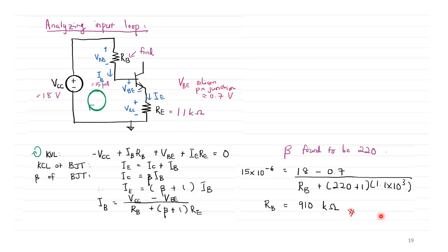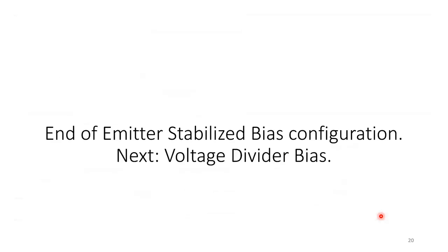We have now completed the subtopic of emitter stabilized bias configuration. Our next topic will still be on DC biasing circuits, but we will look at voltage divider bias, which provides better stability compared to emitter stabilized bias. Thank you.